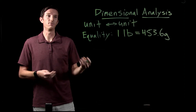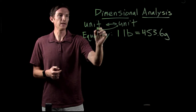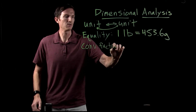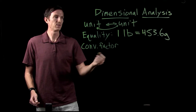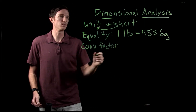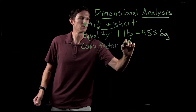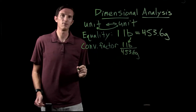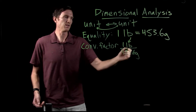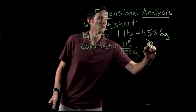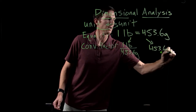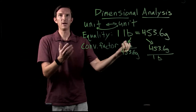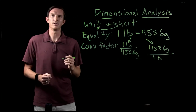We don't usually use equalities directly to convert between units. What we typically use is a conversion factor. A conversion factor utilizes an equality to create ratios. From this equality, we can create two conversion factors: one is one pound over 453.6 grams, and the other is the inverse — 453.6 grams over one pound. This gives us the ability to convert from grams to pounds or pounds to grams.